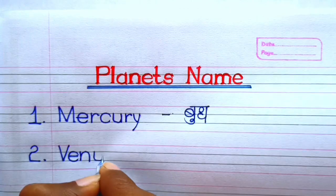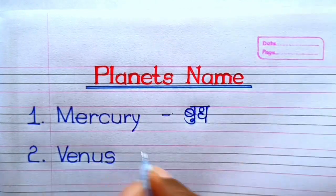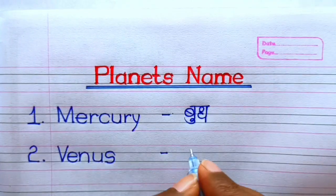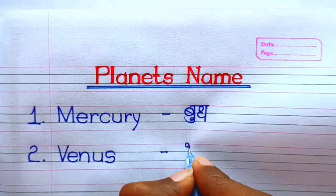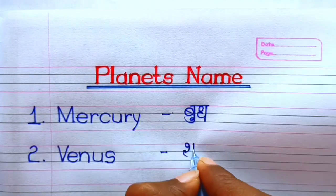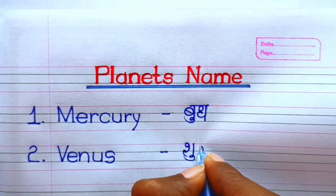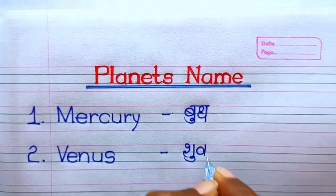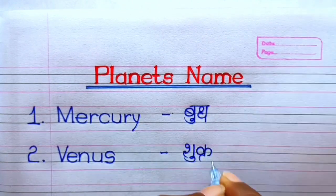Number 2. Venus — V-E-N-U-S. Venus means shukra.